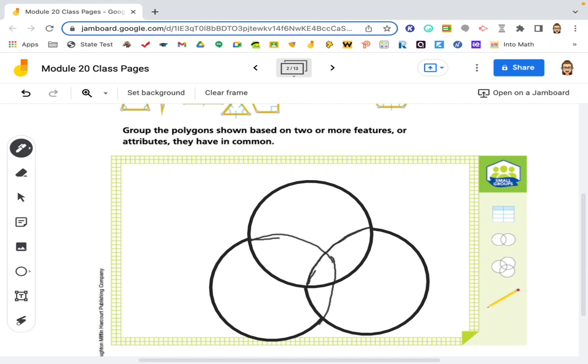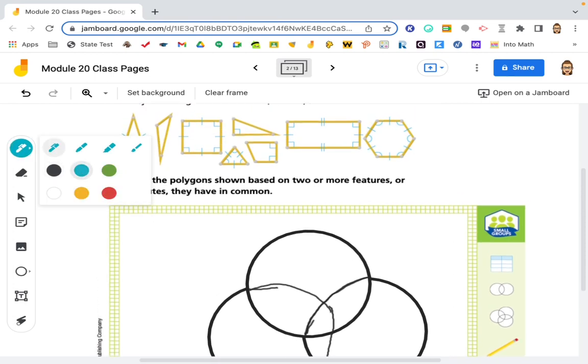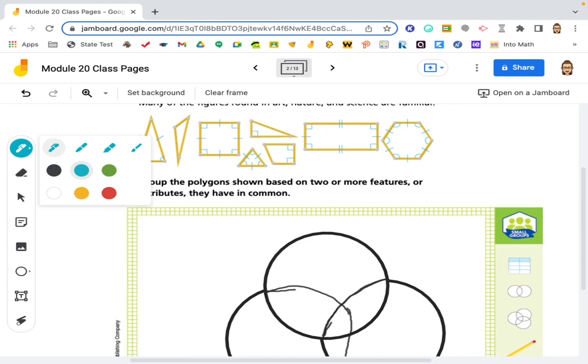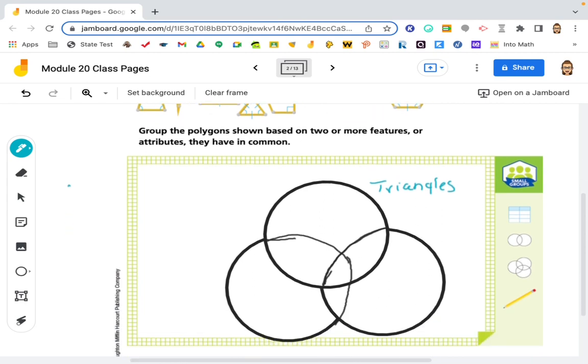Don't mind my rough finishing layers of the circles. Okay, so we're going to put triangles in one because there are several of those. Some of the shapes have at least one right angle, and sides are all the same length.